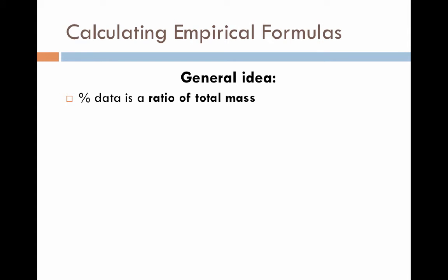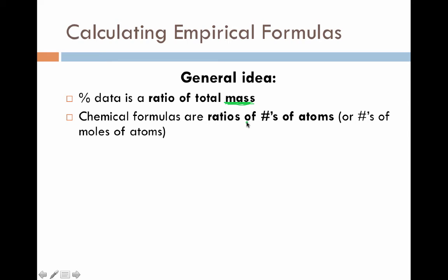The first thing is you're going to be given percent data in the beginning of a problem. This percent data is a ratio of the total masses in your sample, and that mass thing here is very important. So this percent data is closely related to the masses of your samples. A chemical formula, however, is a ratio of the numbers of atoms that you're dealing with, or numbers of moles of atoms. So the process of going from the percent data from combustion analysis to the chemical formula is the process of converting from your mass information into number of atom information. That's the math that we're really going to be focusing on here.